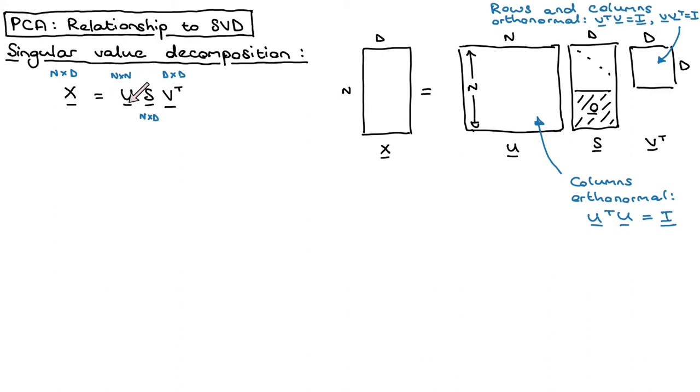You've got the matrix U, the matrix S, and the matrix V transpose. Normally what happens is we've got X, which would be a matrix with N rows and D columns. That matrix can be decomposed into a U that would be N by N, multiplied by matrix S which will be N by D, and then multiplied with the matrix V transpose, which is D by D.